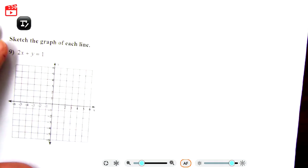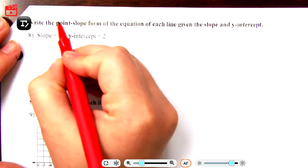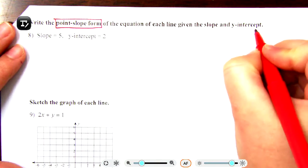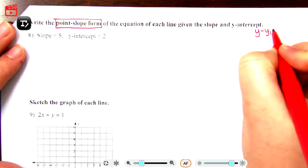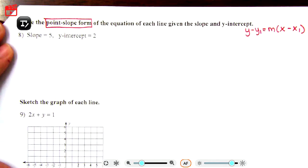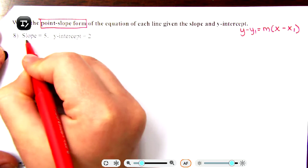We're going to move on to number eight. It is on the other side. Write the point-slope form - again, point-slope form. So I'm going to just off to the side write y minus y1 equals m parenthesis x minus x1, just so I know what my final answer is supposed to look like. Of the equation of each line given the slope and y-intercept. Slope we know is little m.